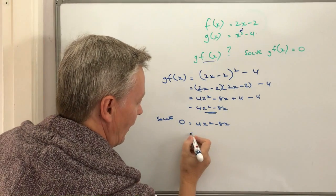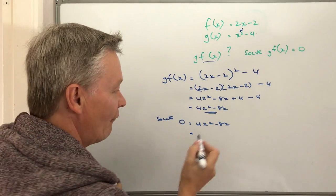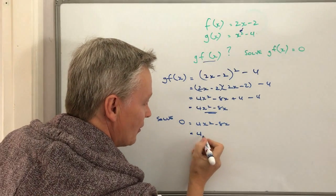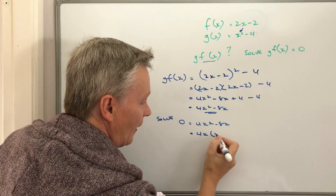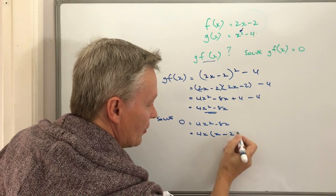So the way to do that would be to factorize it, and what we're going to do is we're going to take out, if I just check my notes here, we take out 4x from both of those, so it's 4x and that's going to give us x minus 2.